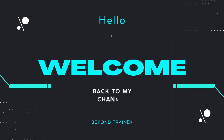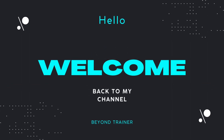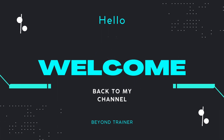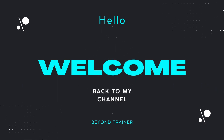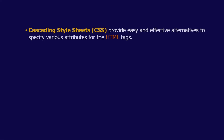Welcome back to the channel. Today we are going to start the CSS course for beginners. First, let us know what CSS is — CSS stands for Cascading Style Sheets. It provides an easy and effective alternative to specify various attributes for HTML tags. Whenever you create an HTML document, it gives you alternatives which can effectively bring out your page with a sense of styling.